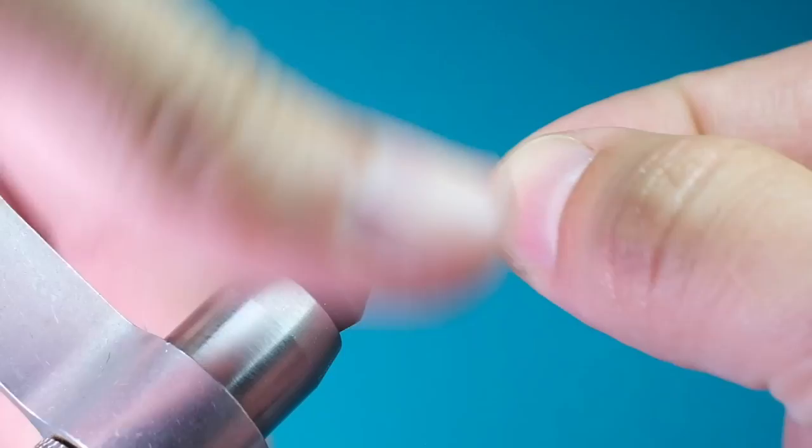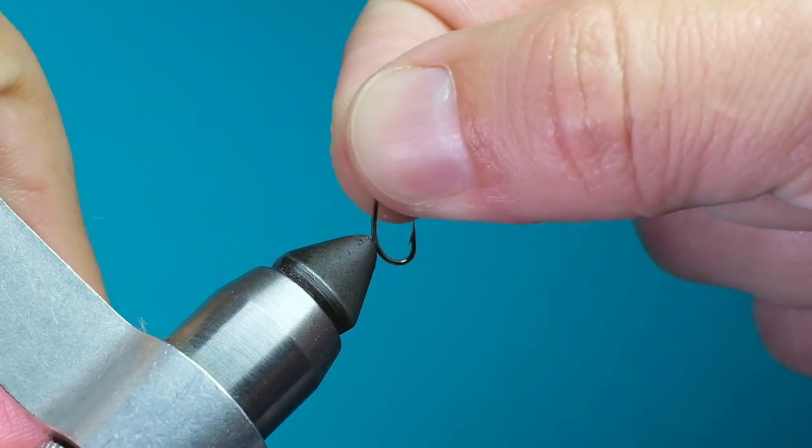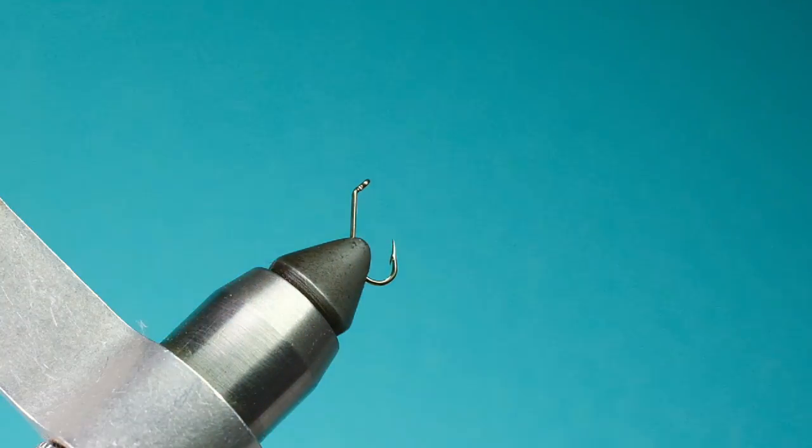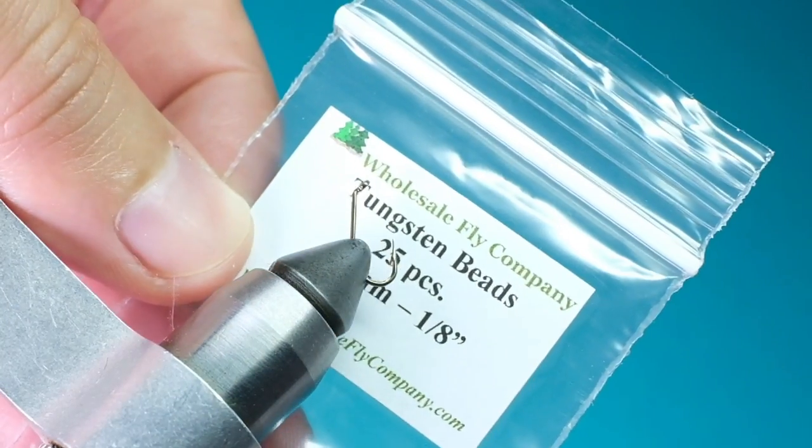Start by mashing the barb of your hook. Here I'm using a size 10 Mustad 3906 and a 1 1/8 inch or 3.2 millimeter tungsten bead in a copper color.